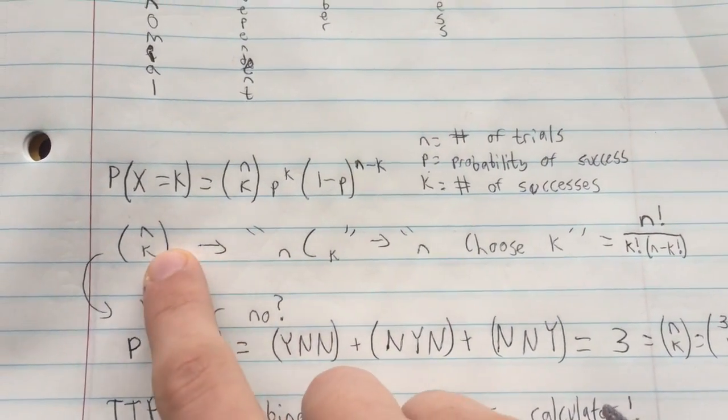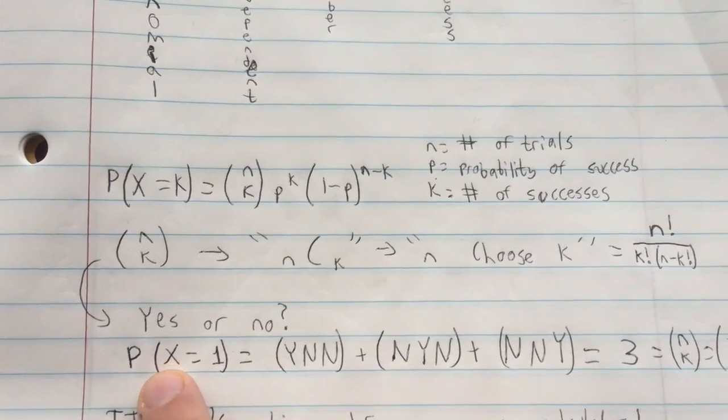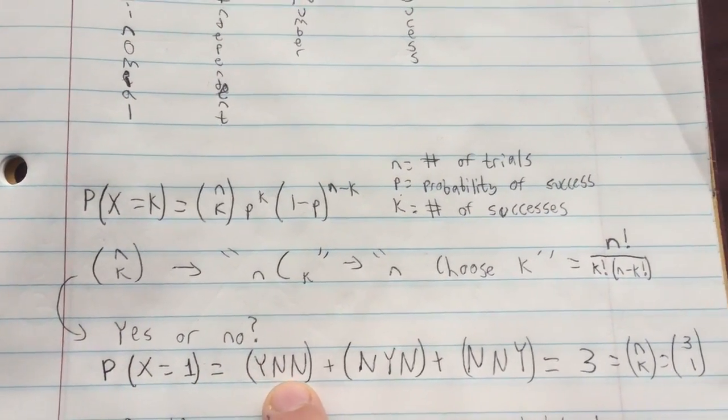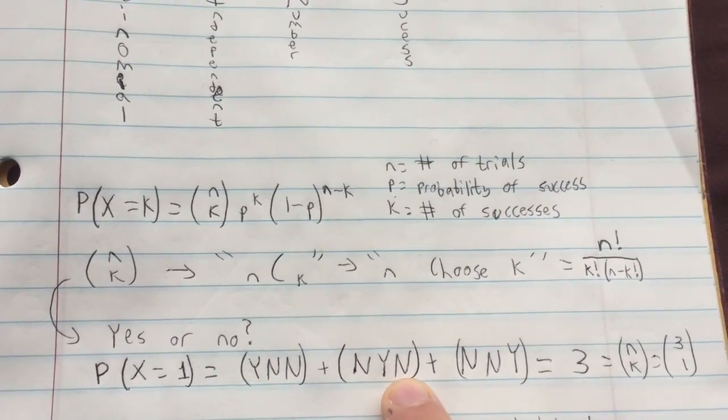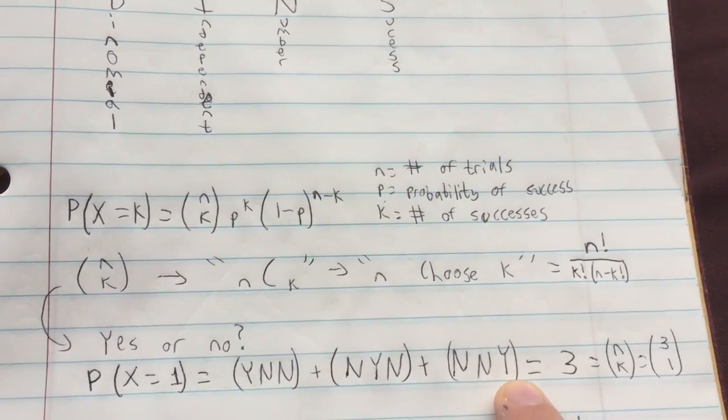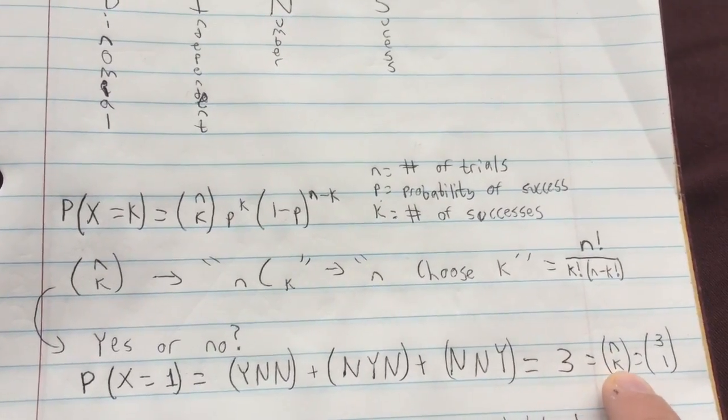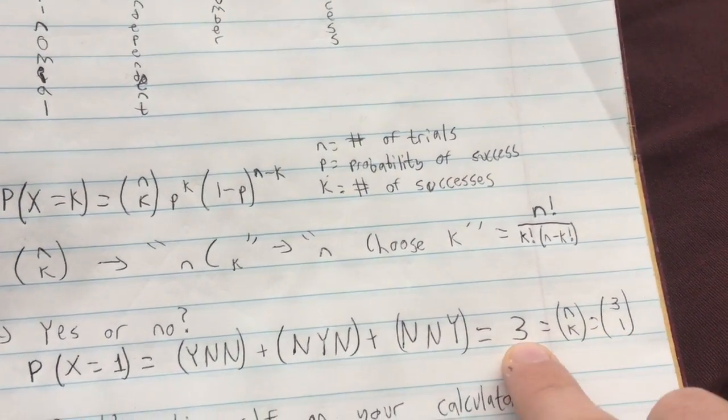So what's this N C K going to be? Well, you could have the first statement be yes and the other ones be no. Or you could have the second statement be yes, or the third statement be yes. So that leaves three possibilities, so N C K is going to be 3.